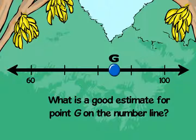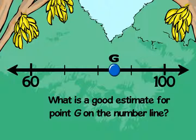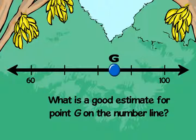Here we go. Start the way we always do. Find the benchmark numbers and the interval between them. The benchmark numbers are 60 and 100. The difference between 60 and 100 is 40, so the interval is 40.